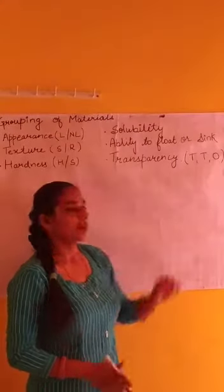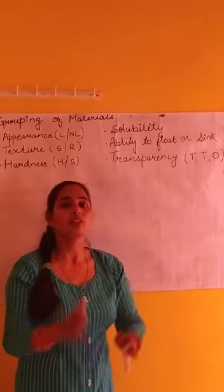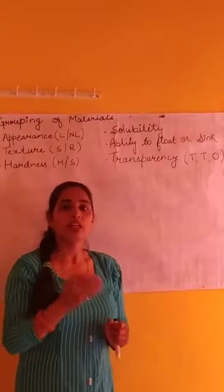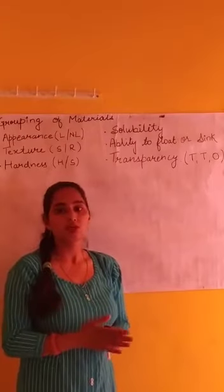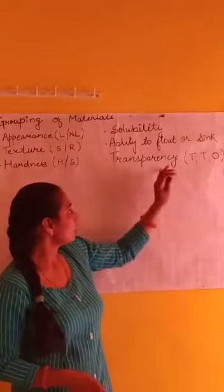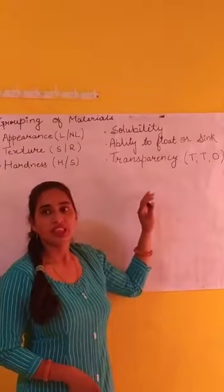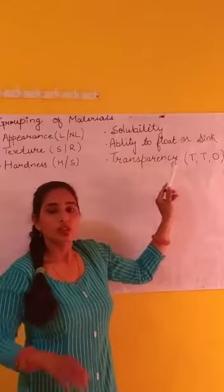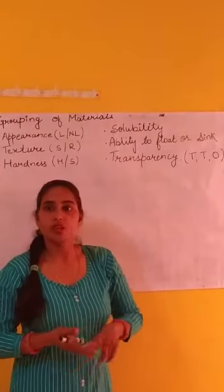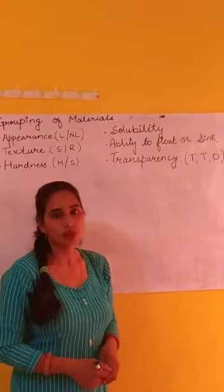Our next property is transparency. Transparency is the ability of an object to allow light to pass through it. We classify objects into different categories based on this: transparent, translucent, and opaque. We will discuss these in the next class in detail with examples.